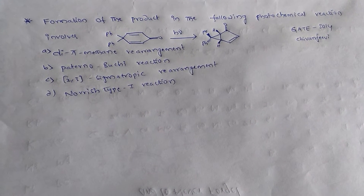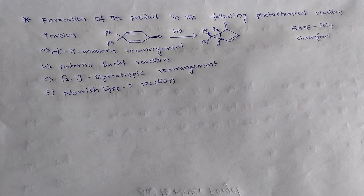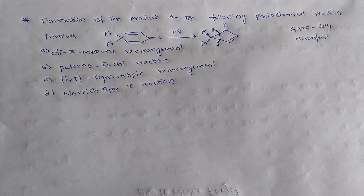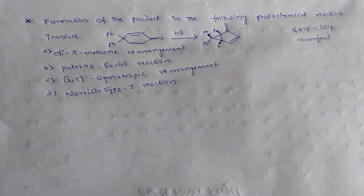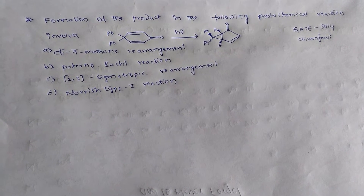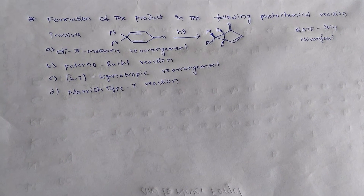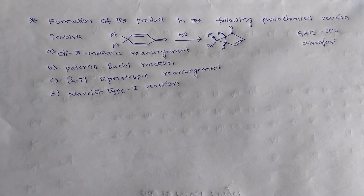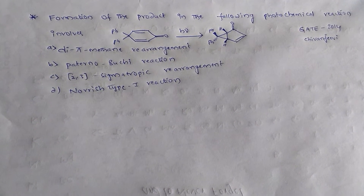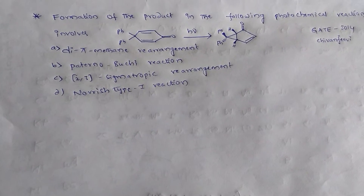Option A: Di-pi-methane rearrangement. Option B: Paterno-Büchi reaction. Option C: 2,3-sigmatropic rearrangement. And option D: Norrish type-1 reaction.